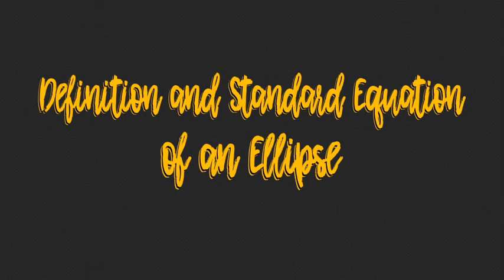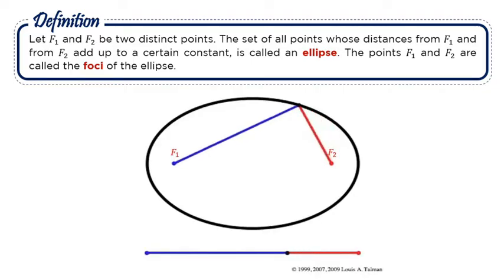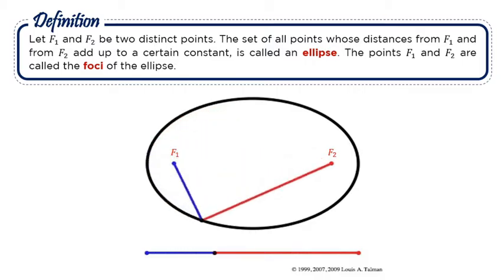Hello, everyone. In this lesson, we are going to define an ellipse and determine the forms of its standard equation. To start, let us consider this definition: Let F sub 1 and F sub 2 be two distinct points. The set of all points whose distances from F sub 1 and from F sub 2 add up to a certain constant is called an ellipse.